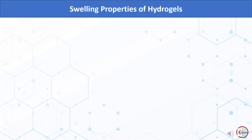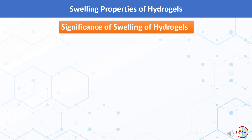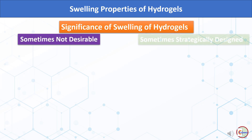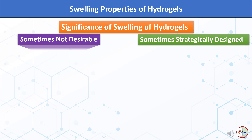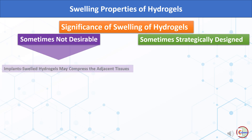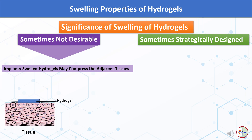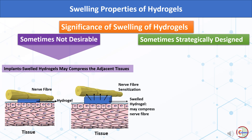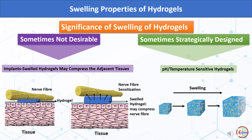The next evaluation covers swelling properties of hydrogels. Swelling is sometimes undesirable — for example in implants where a swelled hydrogel may compress adjacent tissues, potentially compressing a nearby nerve fiber. In other cases swelling is strategically designed, such as in pH- and temperature-sensitive hydrogels, where in response to pH or temperature the hydrogel swells and shrinks reversibly. These types of hydrogels are usually designed for drug delivery.